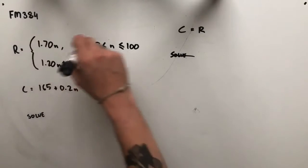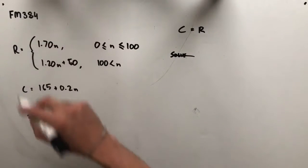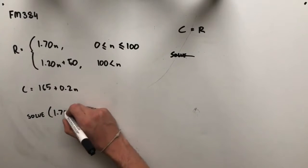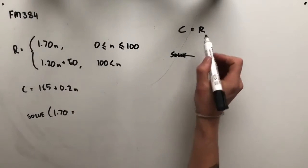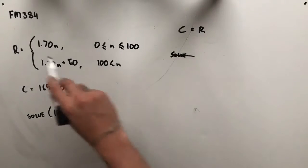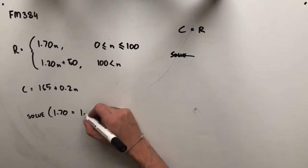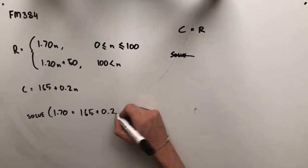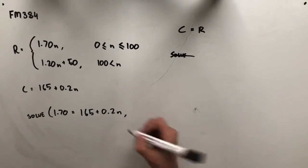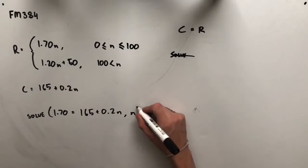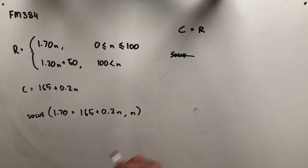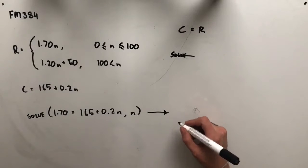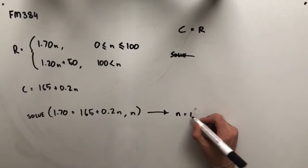We're going to solve when 1.70N, our revenue, is equal to the cost, so 165 plus 0.2N, and of course, we're going to solve that for N. When we plug that into the calculator, we're going to get a value here of N equals 110.